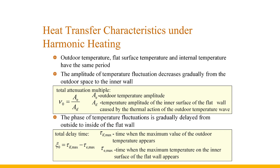Third, the phase of the temperature fluctuation is gradually delayed from the outside to the inside of the flat wall. This phenomenon is called the phase delay of temperature fluctuation — that is, the moment when the maximum temperature occurs is delayed. The total delay time of the flat wall refers to the difference between the time when the maximum outdoor temperature appears and the time when the maximum temperature on the inner surface appears.